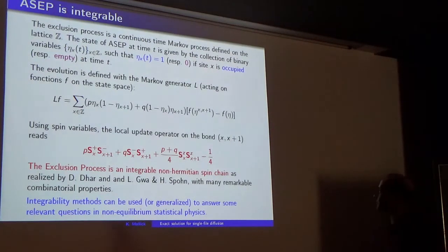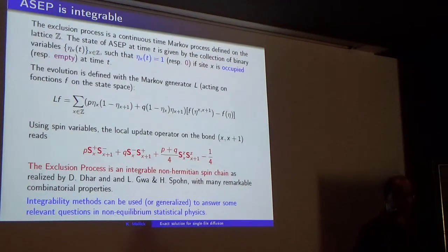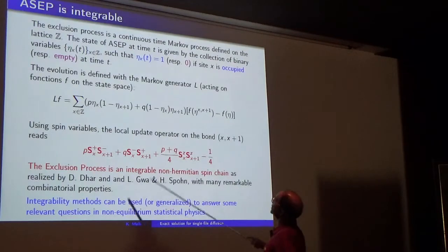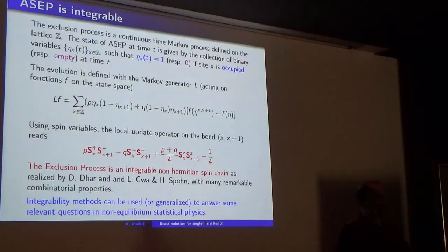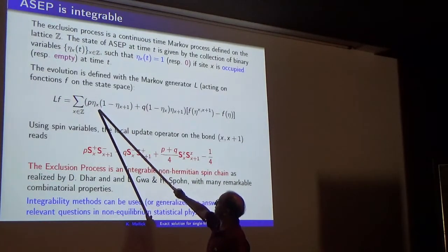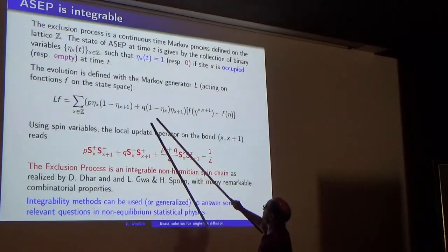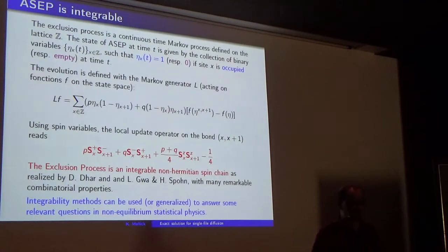Let's come into the subject. ASEP is integrable. What is the exclusion process? It's just a set of particles on the lattice. The state at a given time is given by the occupation numbers at different points of the lattice — a collection of binary variables, eta_x(t) with 0 or 1 if site x is empty or occupied at time t. The evolution is given by a continuous-time Markov generator. A particle present at x can jump to x+1 with rate p, or a particle at x+1 can jump to x with rate q. This tells you how the system varies between t and t+dt.